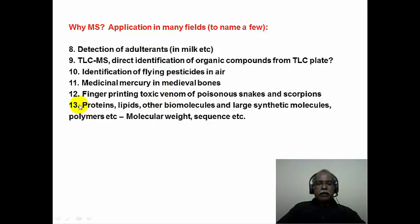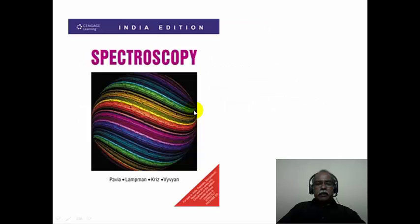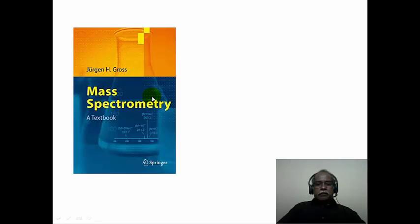An especially important application is the determination of structures of proteins, lipids, and other large biomolecules — both synthetic and biological — using electrospray ionization and MALDI mass spectrometry. The recommended resource material for mass spectrometry is the spectroscopy textbook by Pavia, which has an excellent chapter on this topic. For a more specialized treatment, the textbook on mass spectrometry by Jürgen Gross is also a nice source of information.